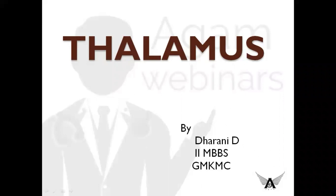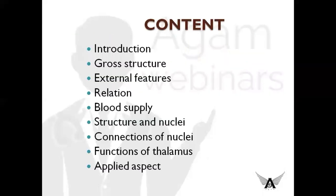Hello guys. In this session, we will be dealing about an important topic, the thalamus. It is important in anatomy as well as in physiology. Today we will be seeing the introduction of thalamus, its gross structure, the external features, its relations and blood supply of thalamus. This part is the anatomy part. Next is the structure and nuclei, connections of nuclei, and the functions of thalamus and applied aspect. This part is the physiology part.